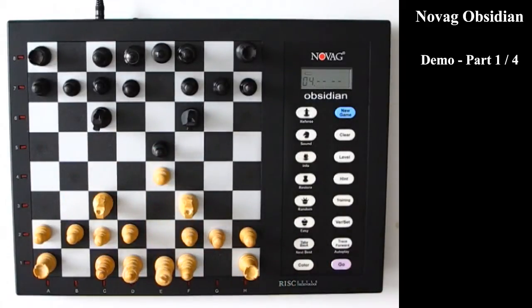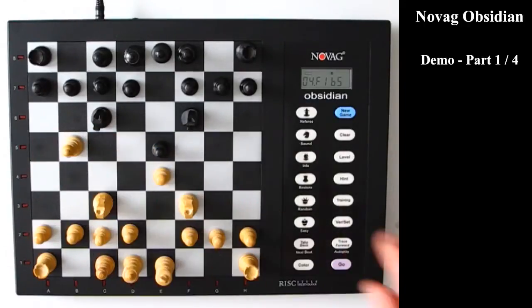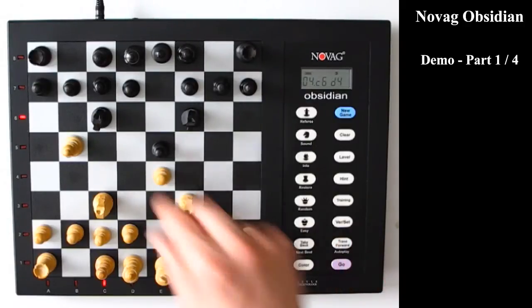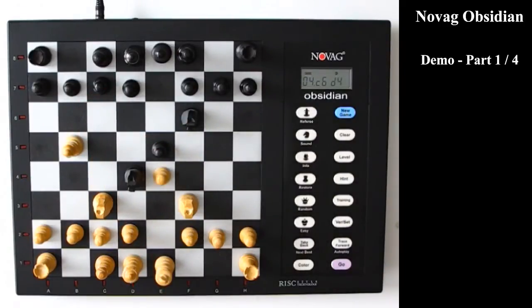Okay so if I now think, well that last move wasn't so bad after all, I want to repeat that move. Then I can just use the trace forward button which is the opposite of the take back button. Then I trace forward once more to repeat the move that the computer made. So that all works fine.